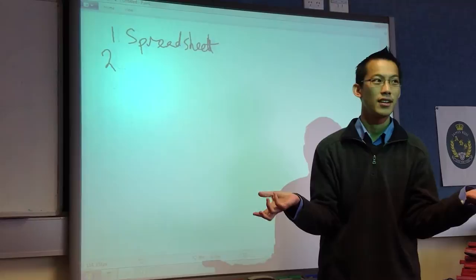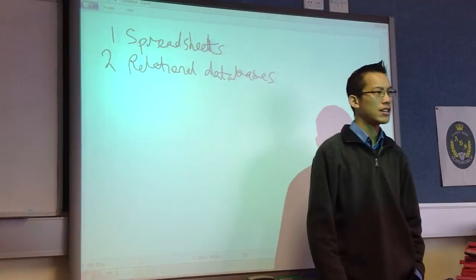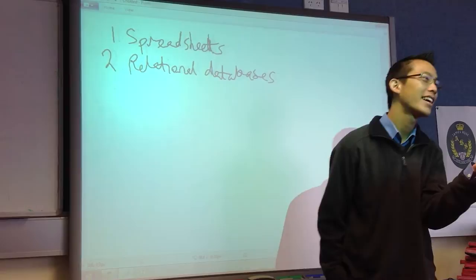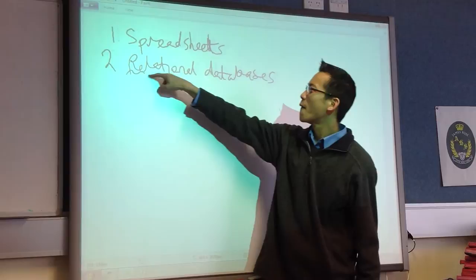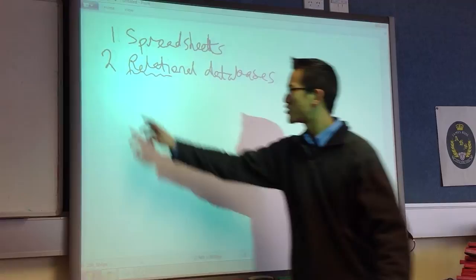Relational databases, right? So as opposed to flat file, in a relational database, what makes a relational database different from a flat file database, from a spreadsheet? What's the distinguishing characteristic? They have a lot of spreadsheets and they relate to each other. Okay, good, right? So this is basically a whole bunch of these with connections between the kind of data that you've got.